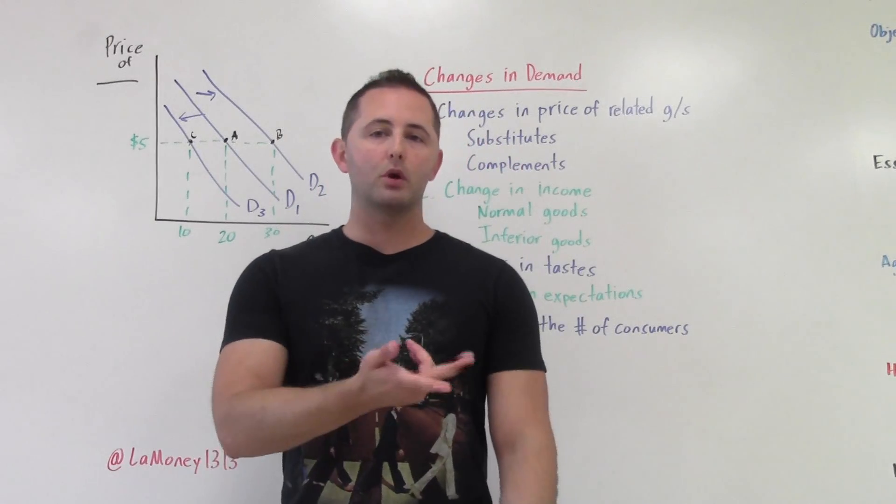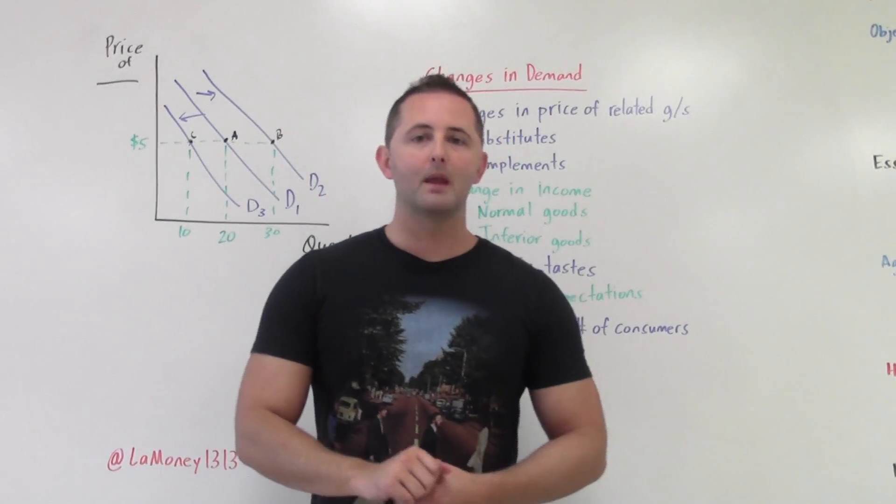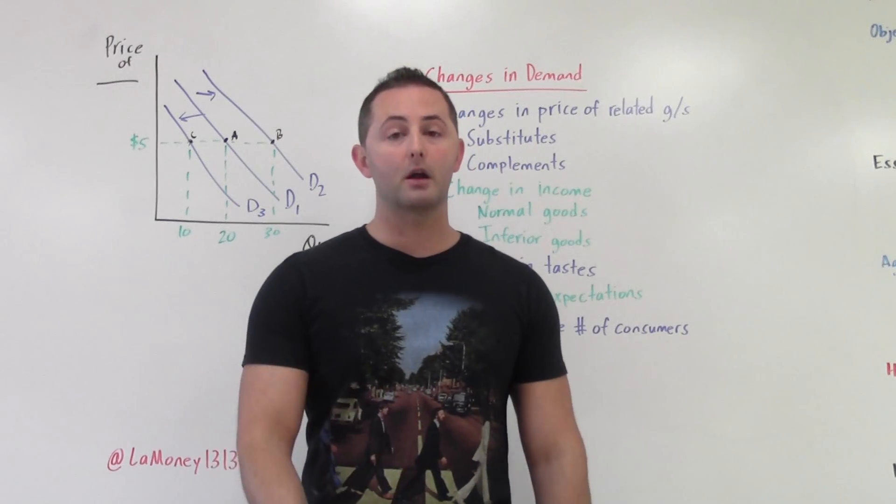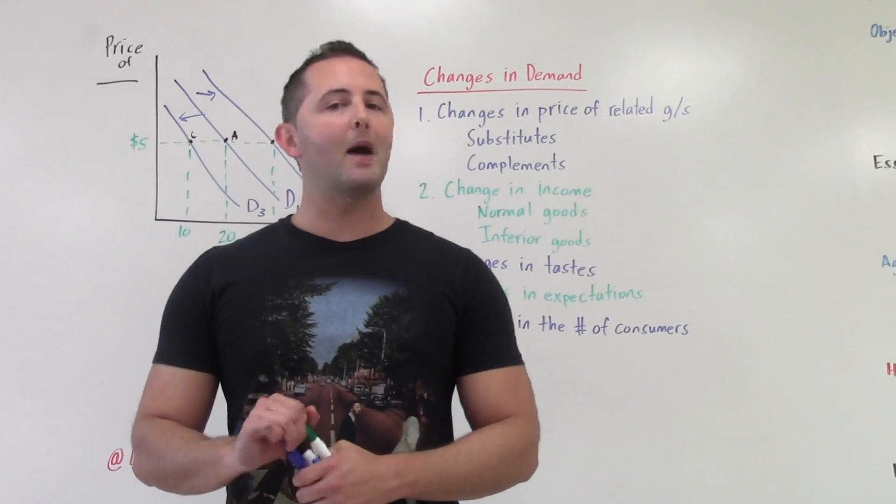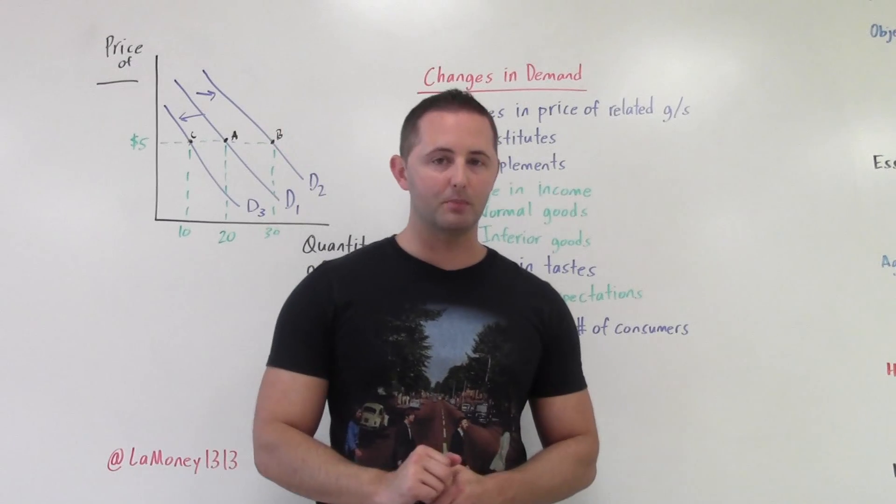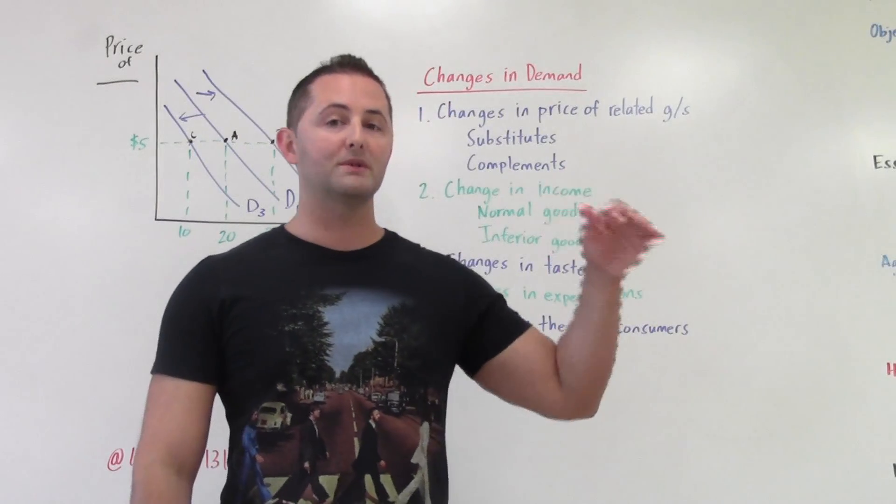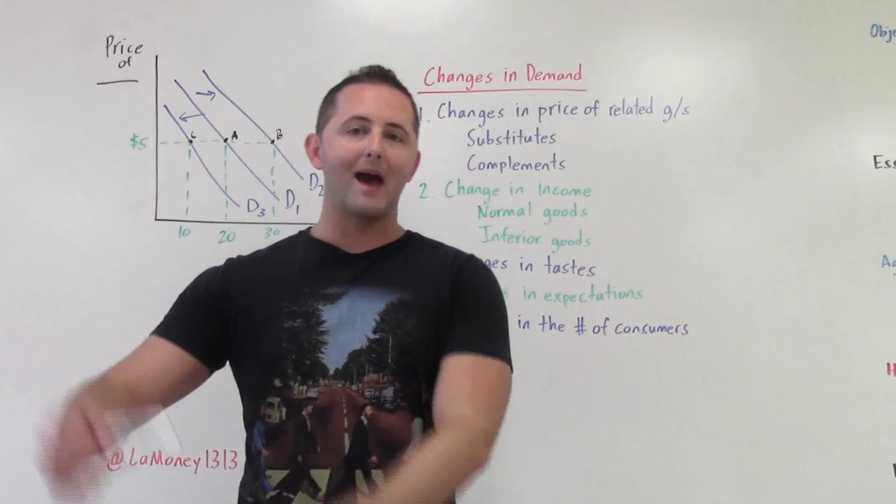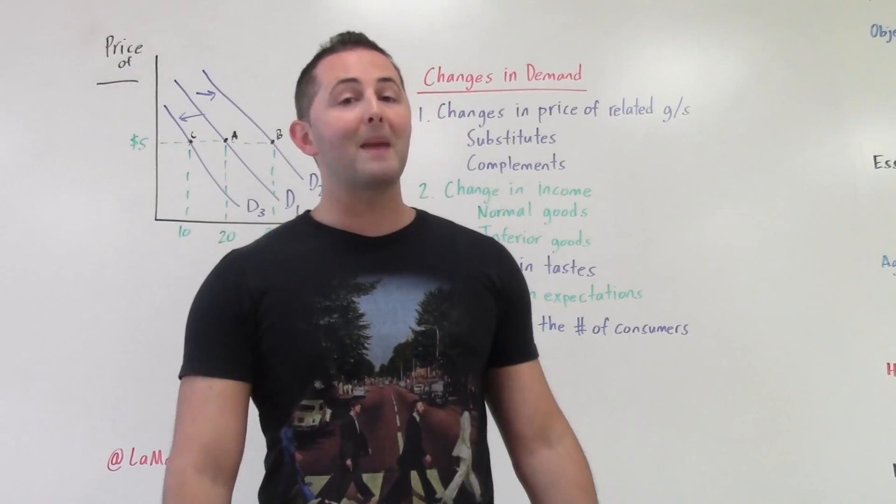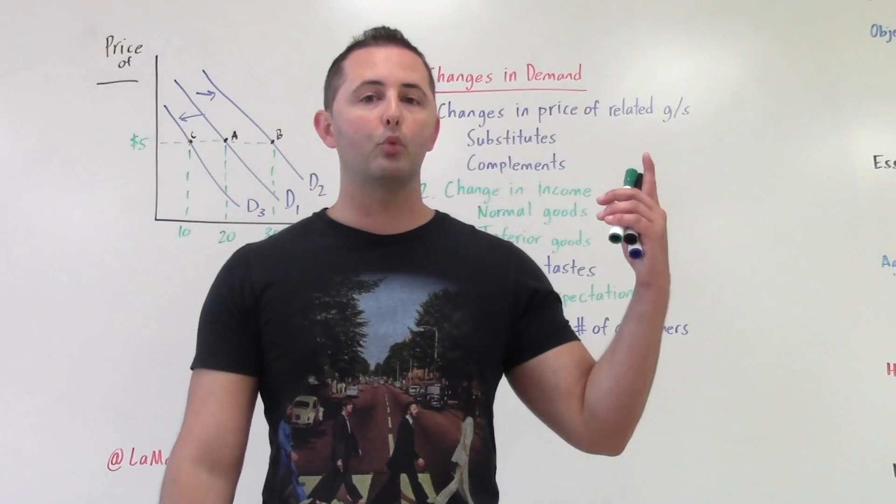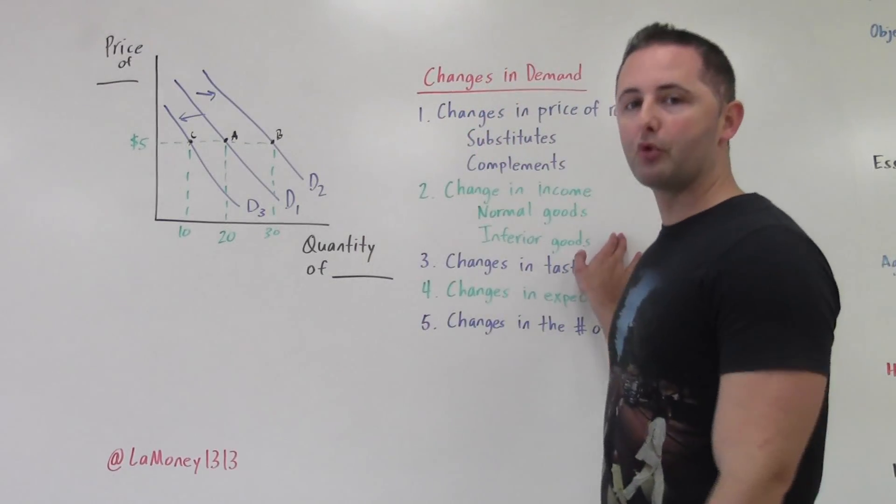For instance, if you lose your job, maybe you buy more generic brand of cereal, the store brand, because it's cheaper. Maybe you buy more ramen noodles because it's cheaper. So inferior goods are the things that work the opposite. Maybe you buy more clothes at a thrift store instead of at the mall, at some nicer store like that. So inferior goods work the opposite. The demand for inferior goods goes up when your income falls. So that's for inferior goods. That's kind of your exception to the rule.